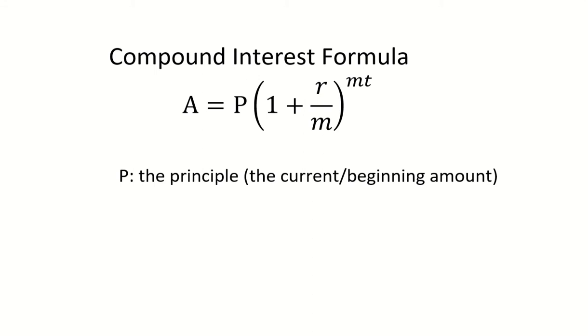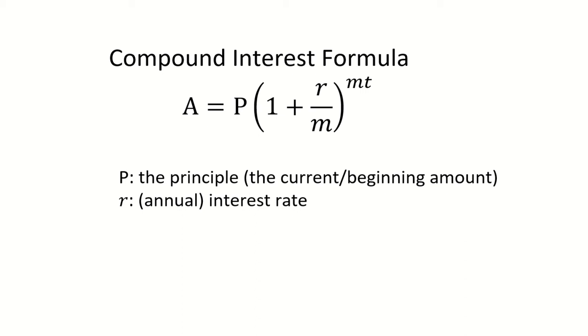P is for principal, which is the current or the beginning amount. R is the interest rate, usually it's an annual interest rate.